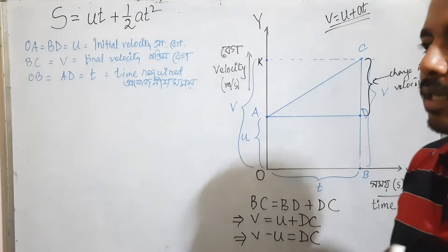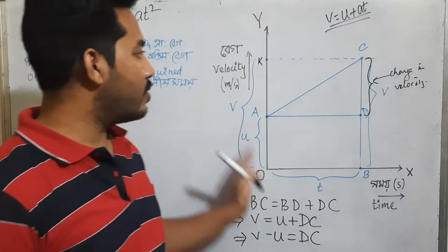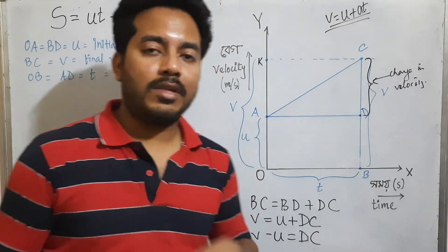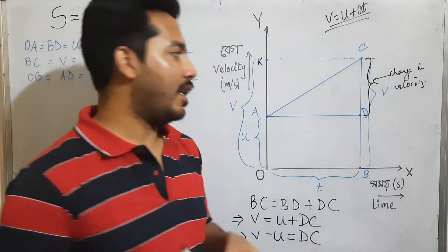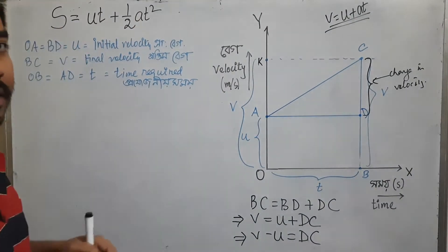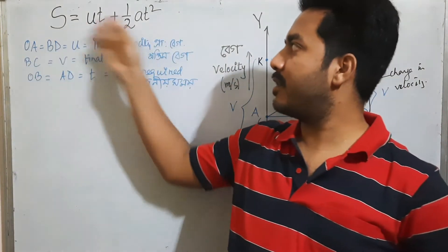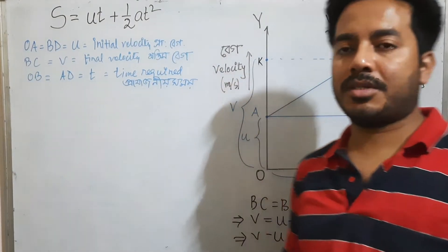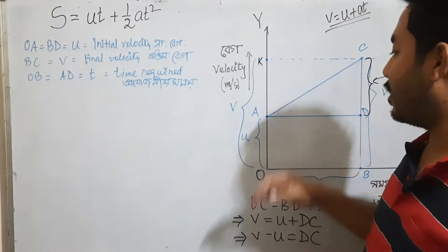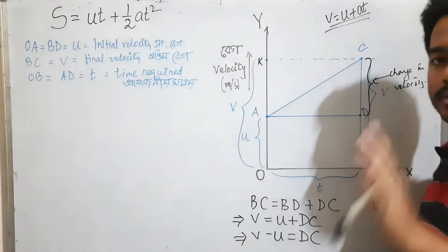In the time interval T, the velocity of the object increases from U to V with uniform acceleration A. At that time, the object may travel displacement S, or distance S. So we are going to find the expression of S, which is given here, but we are going to find the expression graphically with the help of this graph.